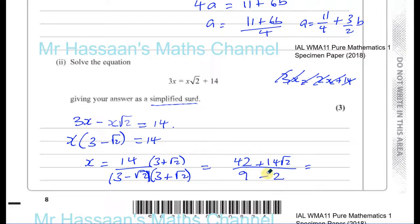So you'll end up with 42 plus 14 root 2 over 7. Now, I can see that there's going to be a 7 underneath it. So I'm going to factorize the numerator. I know 7 goes into both of these. 7 times 6 plus 2 root 2 over 7. And the 7s will cancel out. So you're left with 6 plus 2 root 2 as your answer.